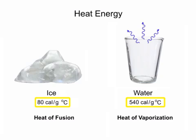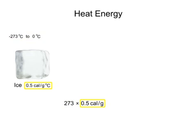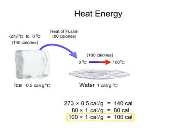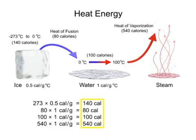With these values, it's easy to calculate exactly how many calories of heat energy are required to transform 1 gram of ice at absolute zero to steam. To warm 1 gram of ice from minus 273 degrees Celsius to 0 degrees Celsius would be 273 times 0.5 calories per gram, or about 140 calories. The phase change of 1 gram of ice to liquid water requires 80 calories. Then, to heat the water from 0 degrees Celsius to 100 degrees Celsius with a heat capacity of 1 calorie per gram would require 100 calories. The final phase change of 1 gram of boiling water to steam would require an additional 540 calories. Adding all of these values together yields 860 calories, the amount of heat energy it takes to transform 1 gram of ice at absolute zero to steam.